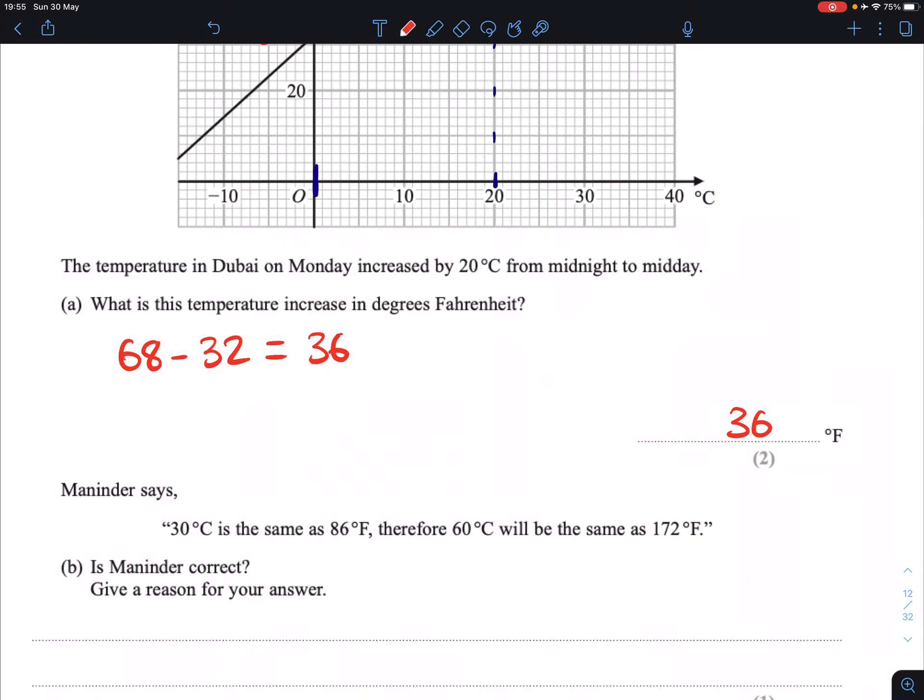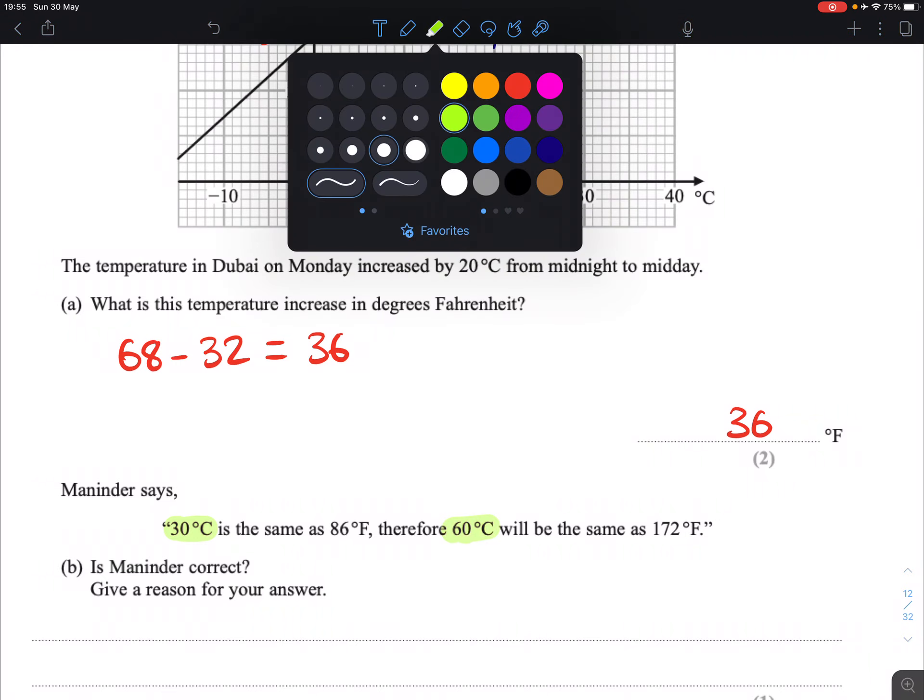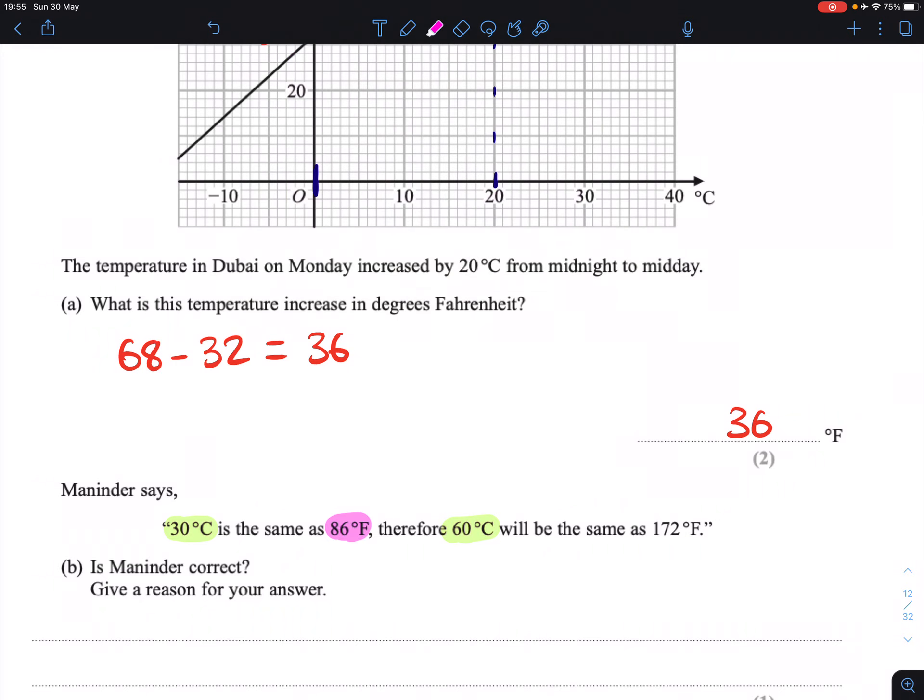Next part, Maninder says, 30 degrees Celsius is the same as 86 degrees Fahrenheit, therefore, 60 degrees Celsius will be the same as 172. So what his statement is here is, if we double the temperature in Celsius, then we double the temperature in Fahrenheit.